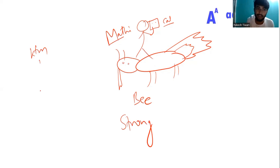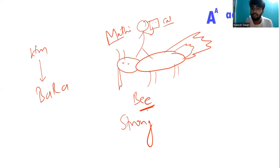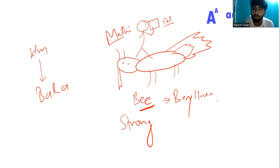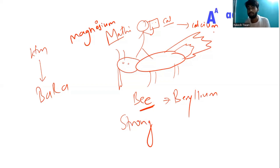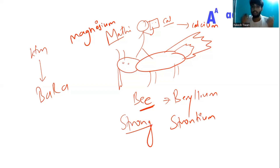B for beryllium, Mg for magnesium, Ca for calcium, and S-T-R-O-N-T-I-U-M — strontium. This is also an alkaline earth metal.